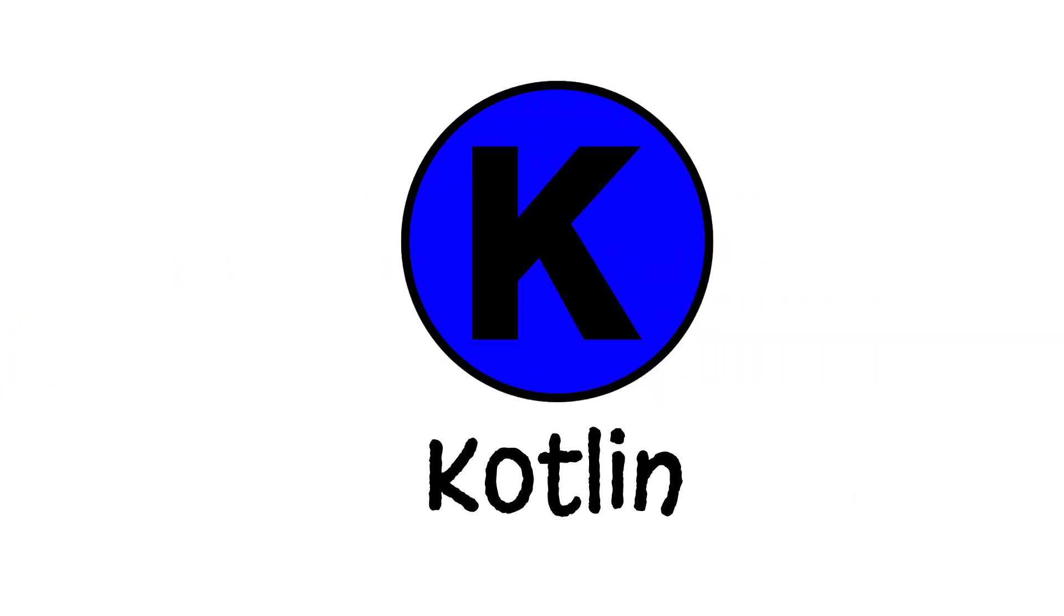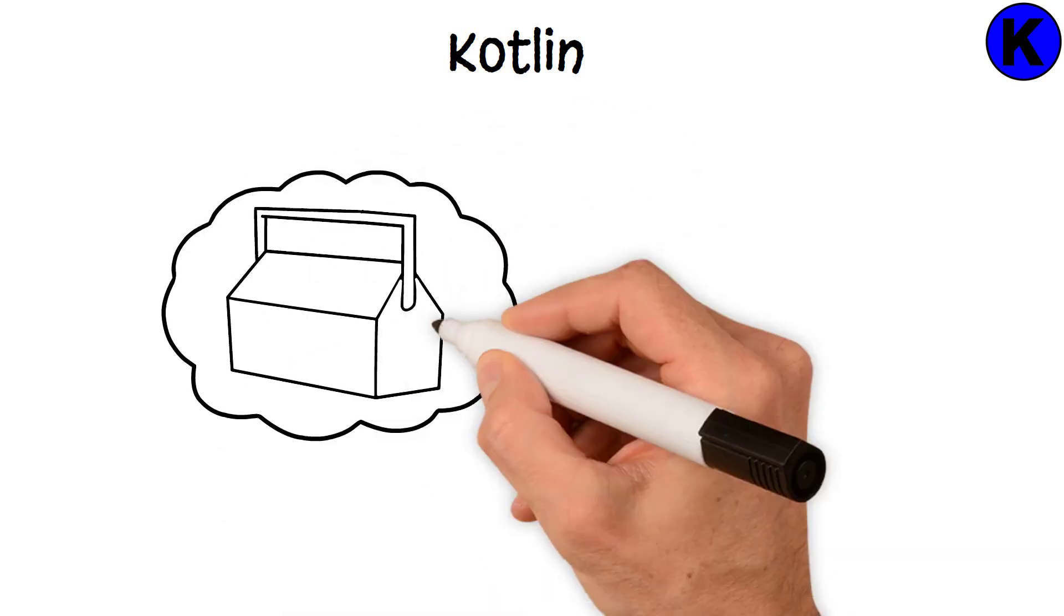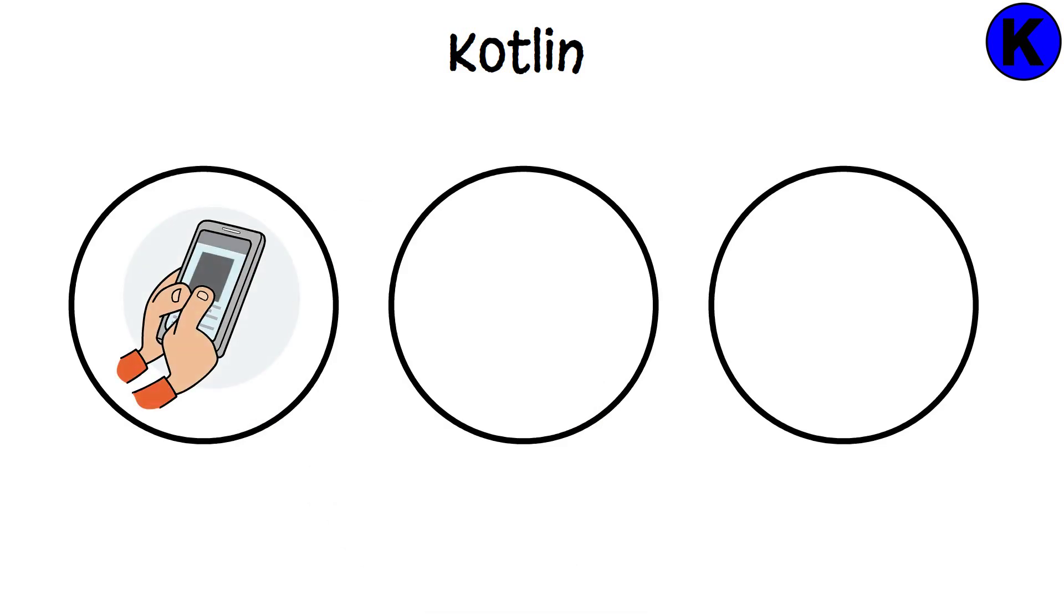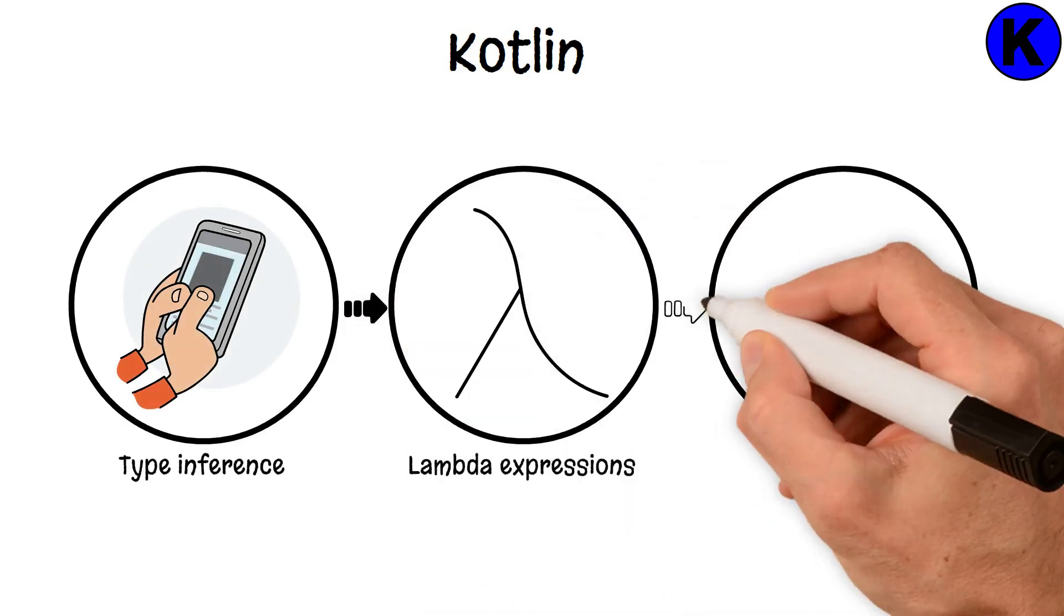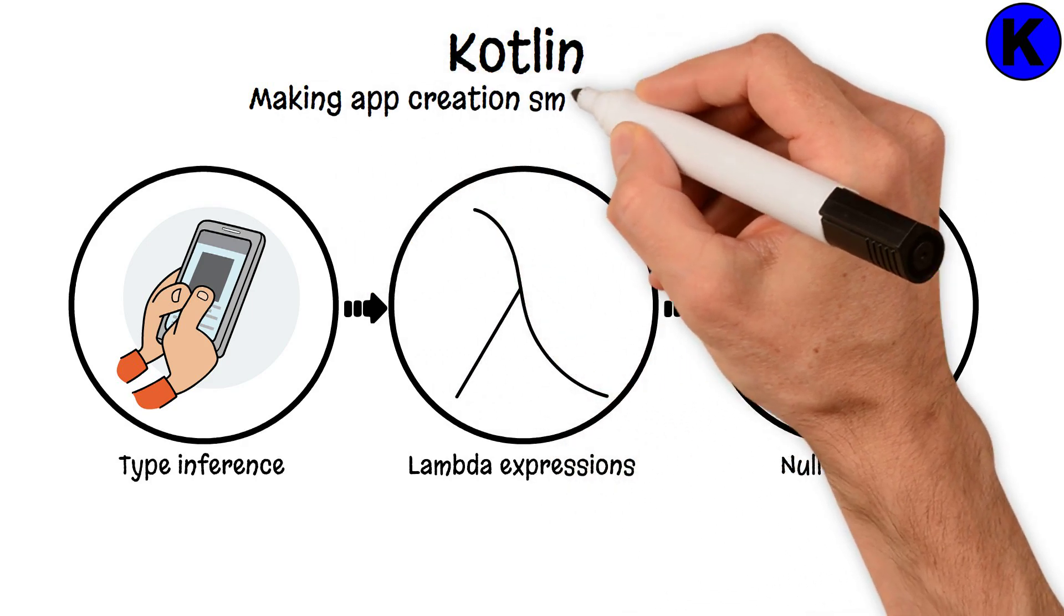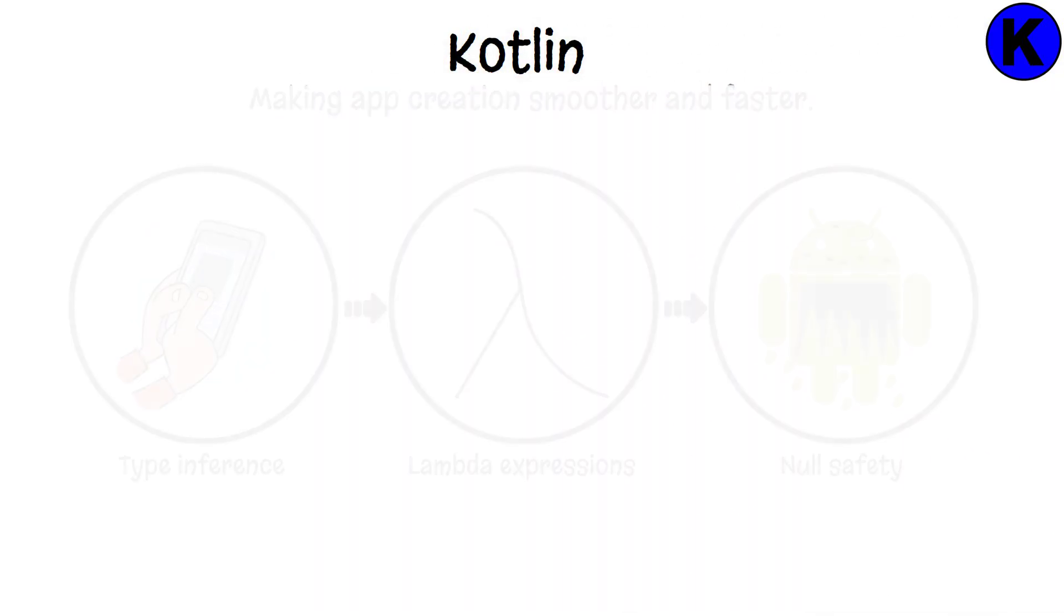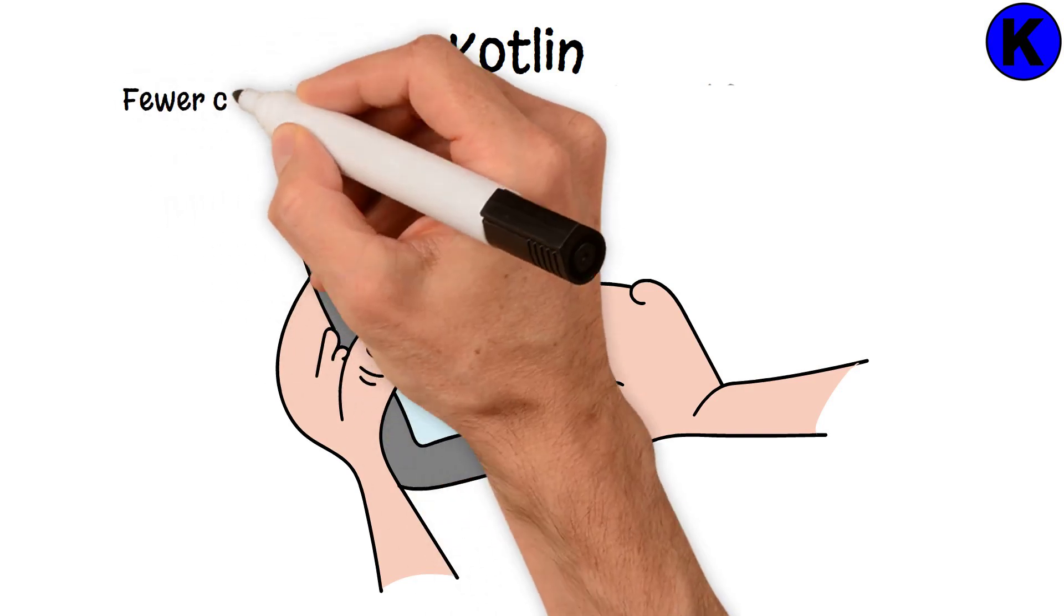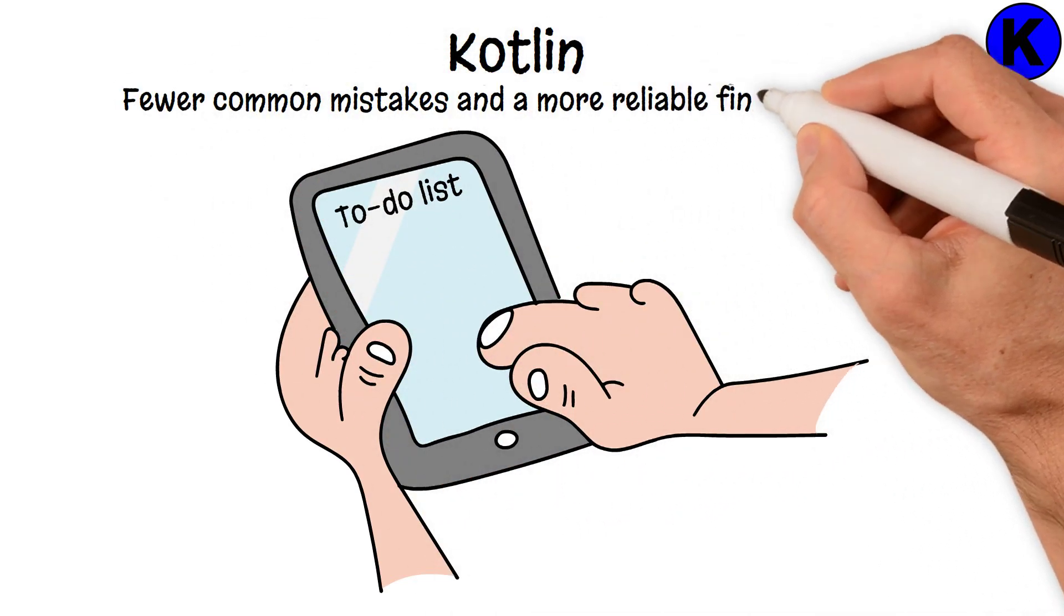Kotlin. Think of Kotlin as a modern toolbox for Android app development. It comes with features like type inference, lambda expressions, and null safety that reduce errors, making app creation smoother and faster. For example, building a to-do list app on Android with Kotlin means fewer common mistakes and a more reliable final product.